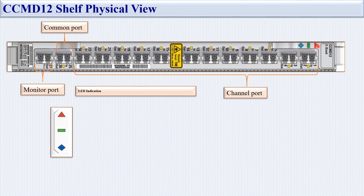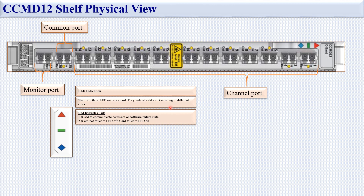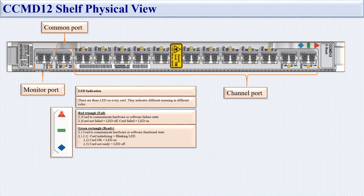The LED indications on every card use three colors: red, green, and blue. The red triangle indicates 'Fail' — it communicates hardware or software failure. If the red LED is off, the card has not failed and is working properly. If the card fails, the red LED will be on.